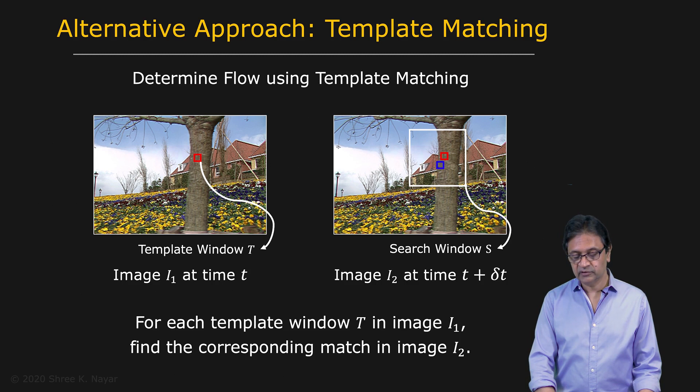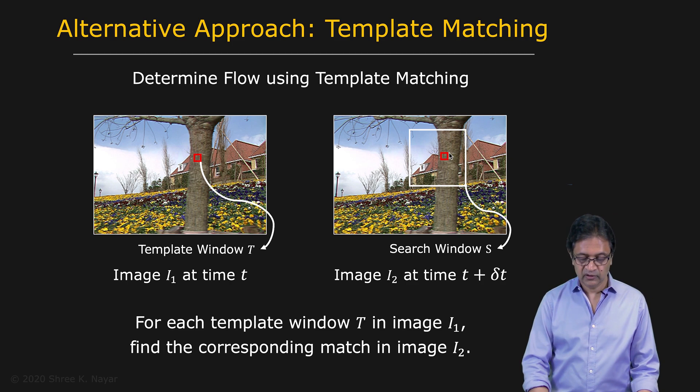By using a large enough window, we have to make the search window, the search space large enough because we don't really know how strong the motion is, what the magnitude of motion is. And then we find the best match. And the difference between the locations of these two windows is the optical flow vector UV.